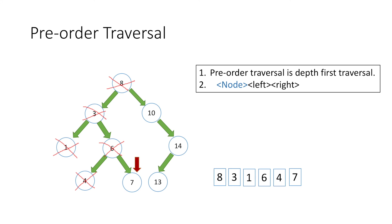We print 7, strike it off, and see that it has no left or right child, so we move a node up. We observe we have already traversed the left and right of node 6 and node 3, so we move directly up to node 8. As we have already traversed this node and its left subtree, we move to its right subtree. So we move to node 10, print its value, and strike it off as traversed. We are supposed to move to its left child, but there is no left child.